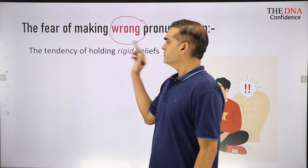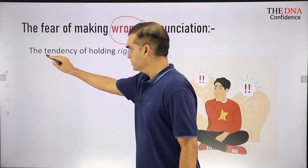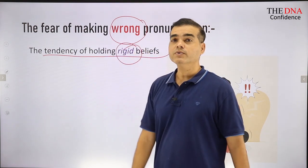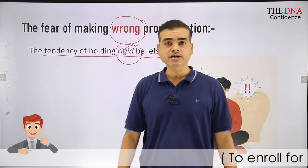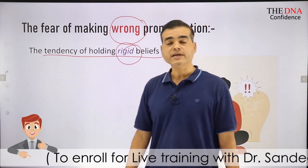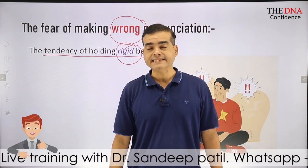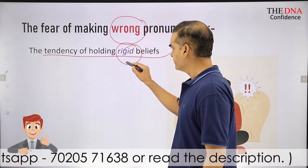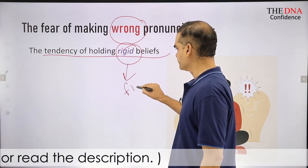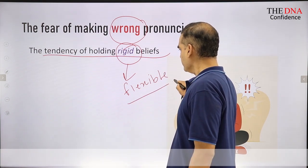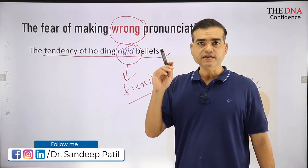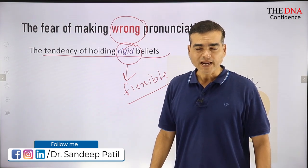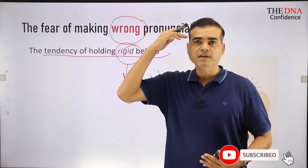Why do we have this fear of making wrong pronunciation? Because we have a natural, inborn tendency of holding rigid beliefs. We are naturally wired for thinking irrationally, thinking in a wrong way, thinking in a self-hurting way. The opposite of rigid is flexible. We are not holding flexible beliefs — we are holding rigid beliefs, and these rigid beliefs are the main reason why we disturb ourselves while pronouncing any word.